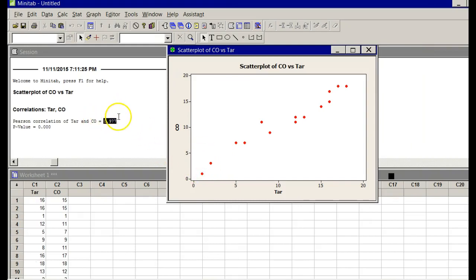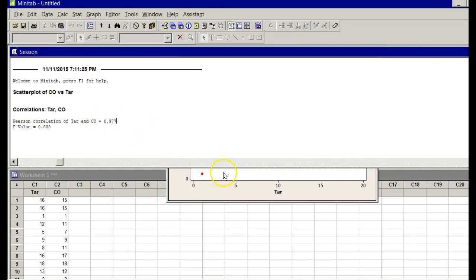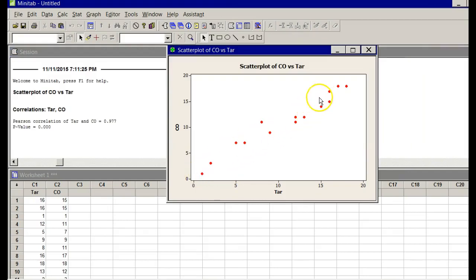The way you see that it's positive: number one, this value is a positive number, the 0.977, but also think of the slope of a line - it's going uphill, so it's positive correlation. If it's going downhill it would be negative correlation.